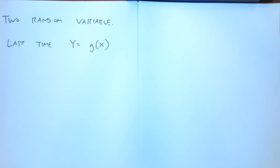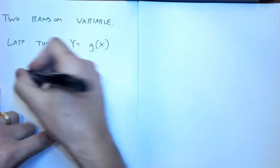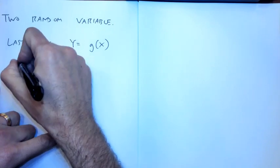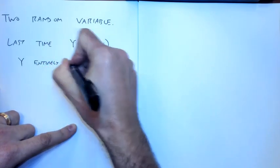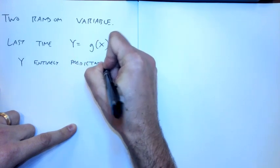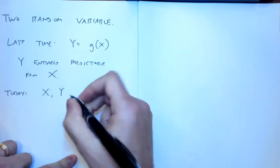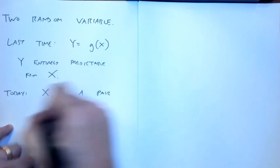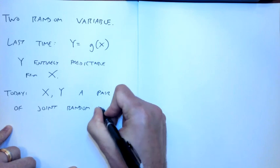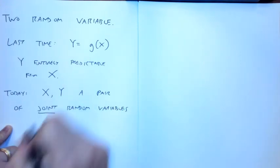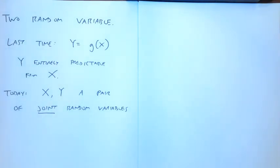For example, your height and your weight are both random variables with their own distributions — they look Gaussian in height and Gaussian in weight — but there are also potentially correlations between the random variables. These random variables aren't always necessarily independent; they can vary against each other. So the premise is that last time y was entirely predictable from x, but today we want to talk about x and y as a pair of joint random variables.